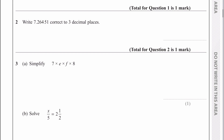Let's look at question number 2. It says write that number correct to 3 decimal places. The third decimal place is going to be a 4, and the question is does that 4 change? Yes it does — it's going to change to a 5 because the number after it is 5 or above. So the actual answer to this one will be 7.265.